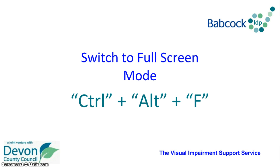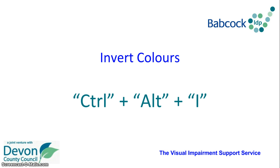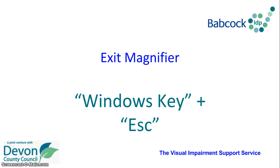To switch to Full Screen mode, you press Ctrl, Alt and the F key. To switch to Lens mode, you press Ctrl, Alt and the L key. To invert colours, you press Ctrl, Alt and the I key. And to exit Magnifier, you press the Windows key and the Escape key.